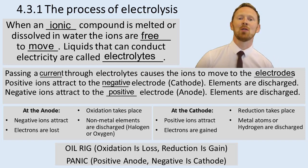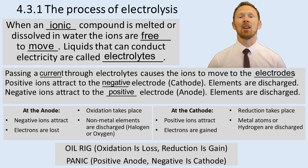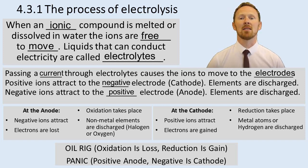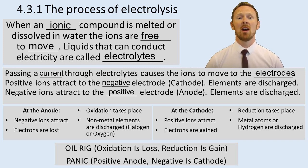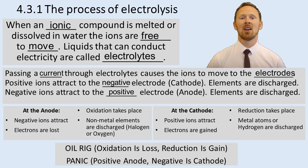At the cathode, the positive ions are attracted. The electrons are gained at the cathode, and from OIL RIG, reduction is gain. So reduction takes place, meaning metal atoms are discharged — or hydrogen. The rule is: if the metal ions in solution are more reactive than hydrogen, then hydrogen is discharged. But if the metal ions are less reactive than hydrogen, then the metal ions are discharged.